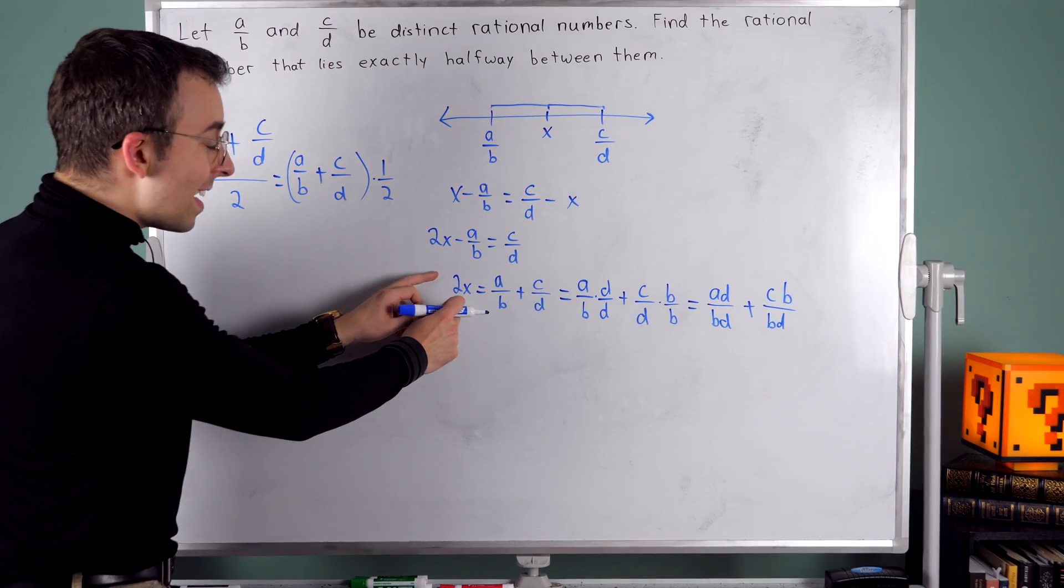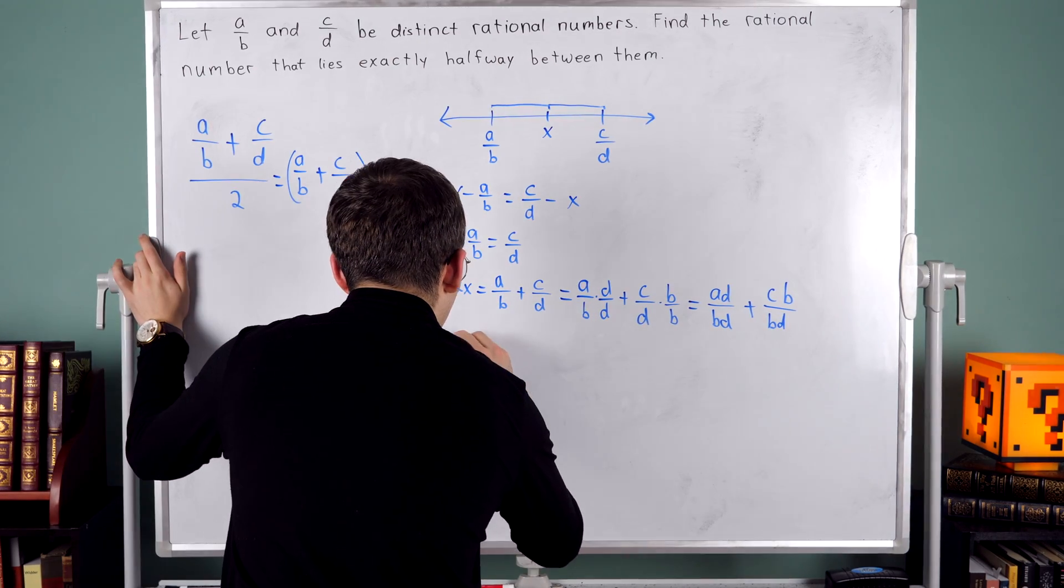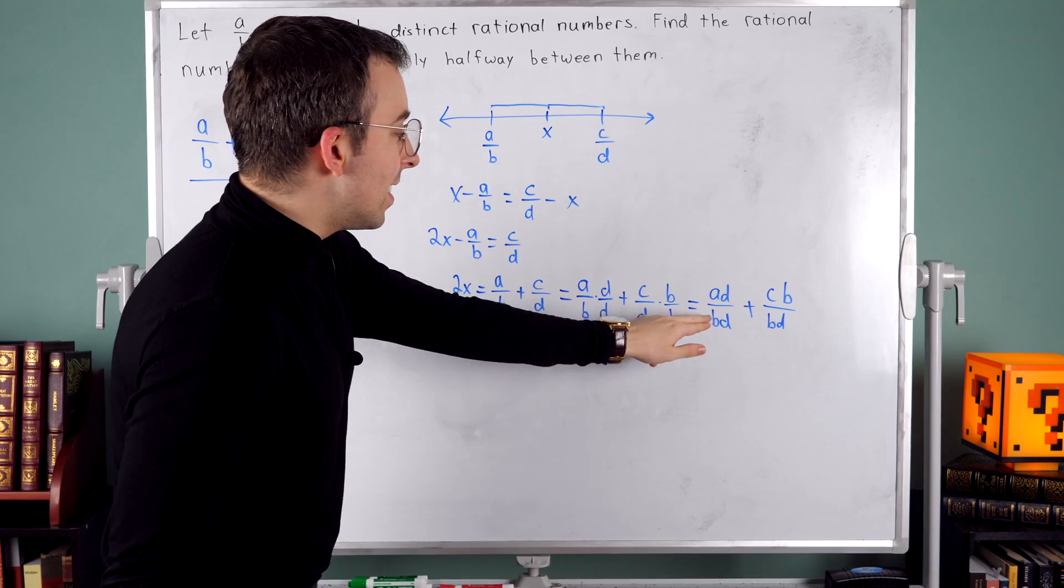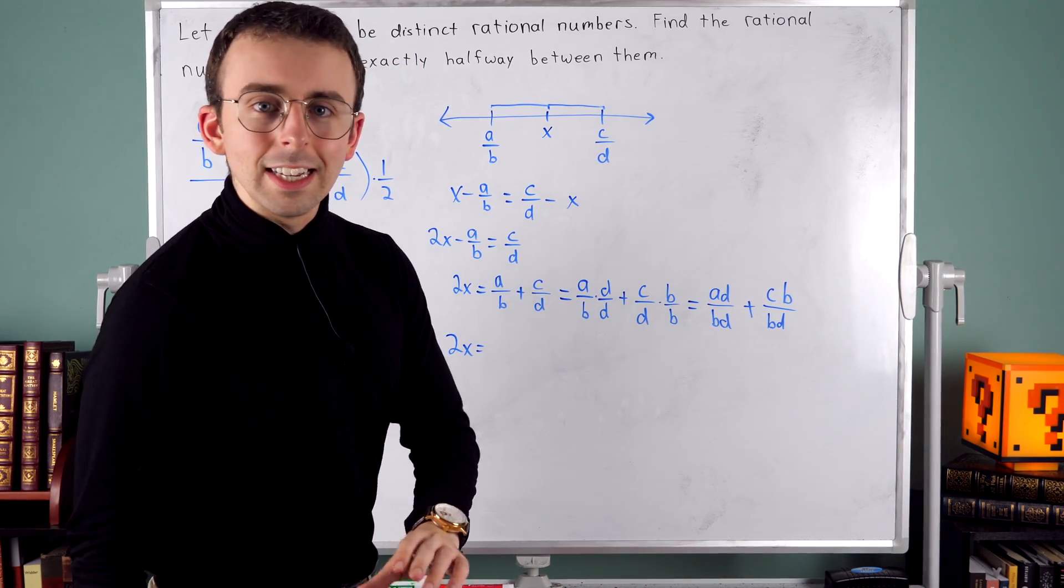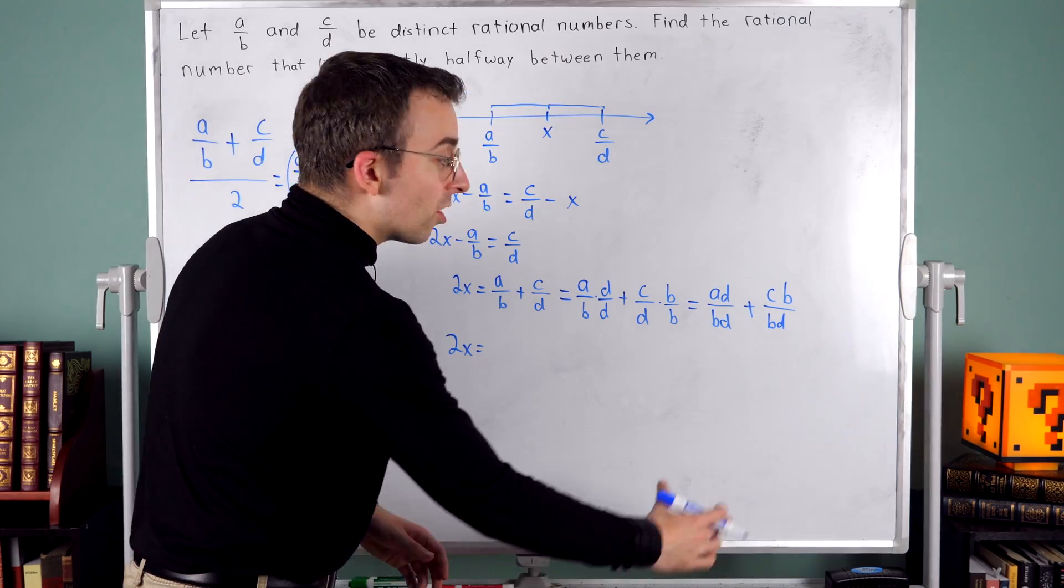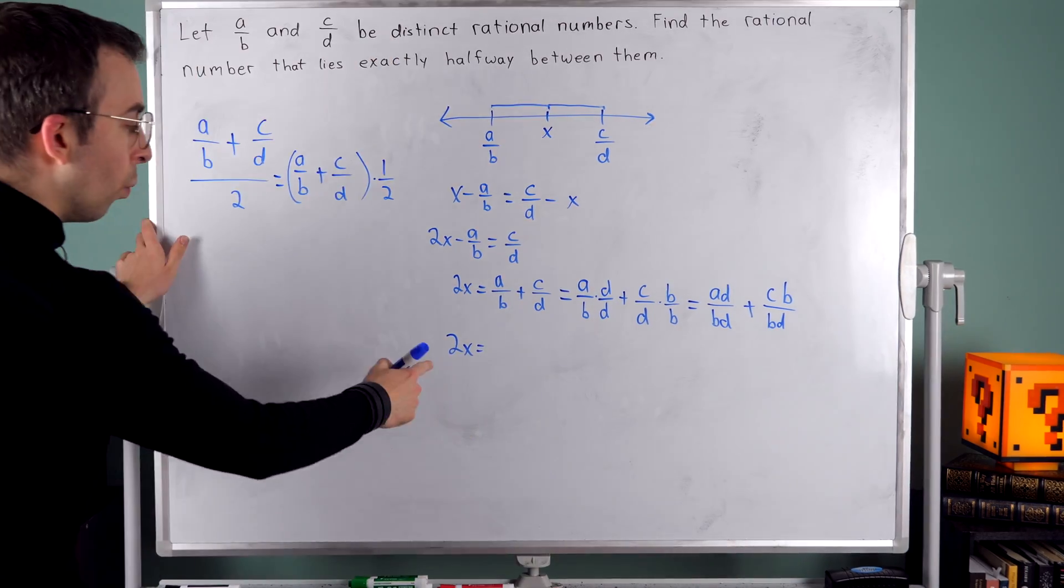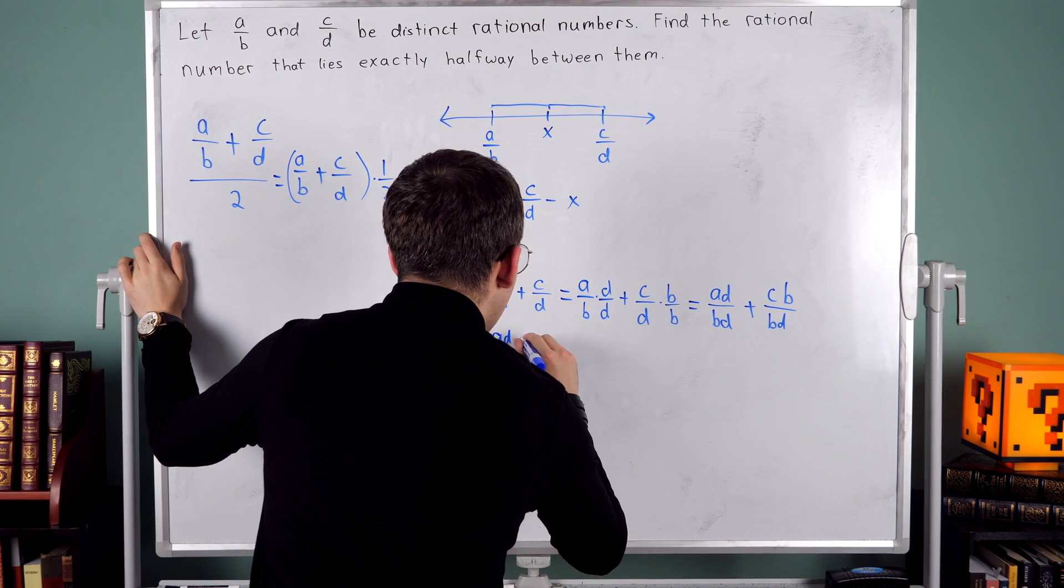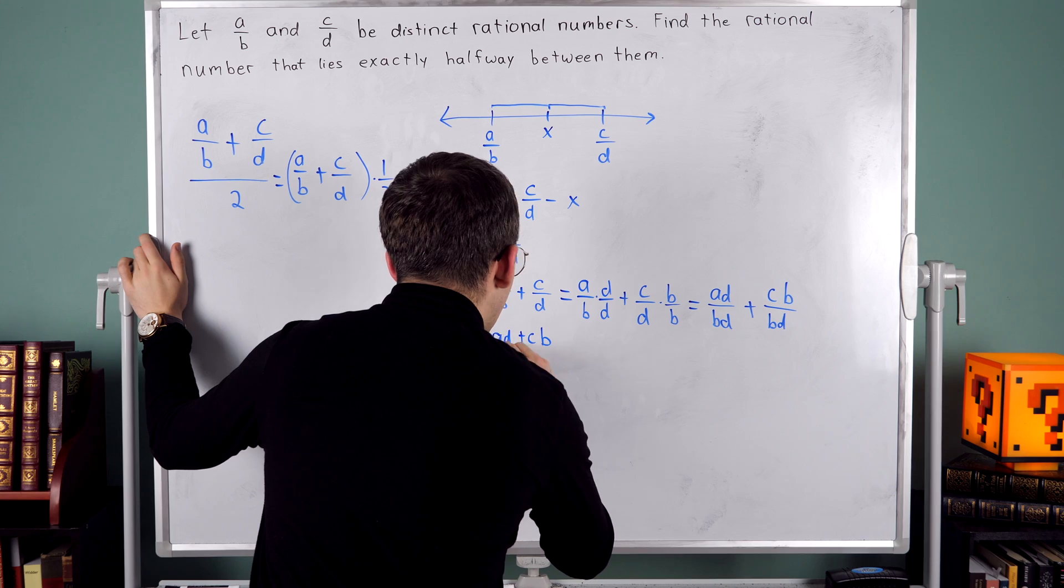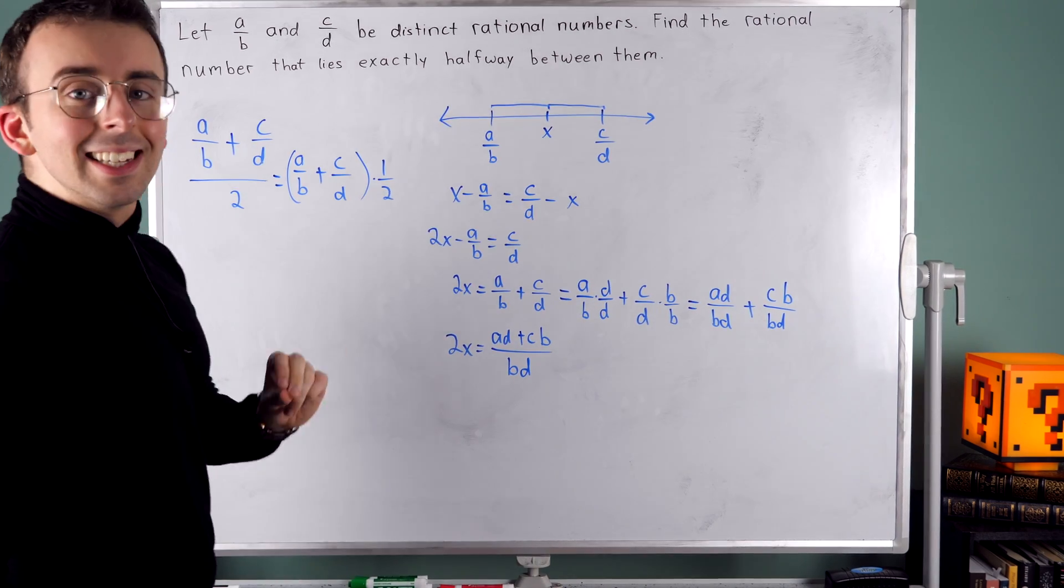So now I have two X equals this. Let's write that two X equals A D over B D plus C B over B D. Since these two fractions now have the same denominator, I can combine them into one. So two X is equal to A D plus C B all over that common denominator B D.